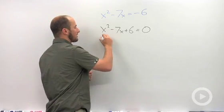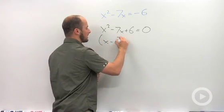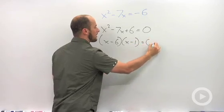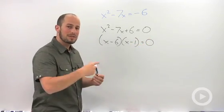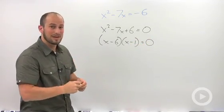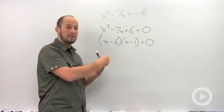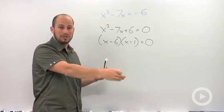So we can easily factor this: (x - 6)(x - 1) = 0. Now where the multiplication and the fact that it's equal to zero comes in handy is that we have two things being multiplied equal to zero.